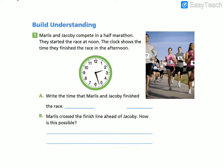Let's take a look at number one. Marlise and Jacoby compete in a half marathon. They started the race at noon. The clock shows the time they finished the race in the afternoon. Write the time they finished the race. So we need to take a look at our clock. First, I'm going to look at my hour hand. I can see that my hour hand is in between two and three, so I know that means it's the hour moving to three. So it is two o'clock.